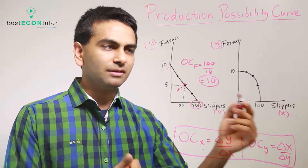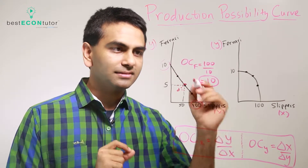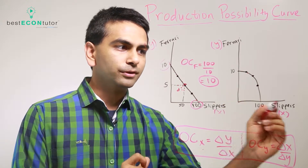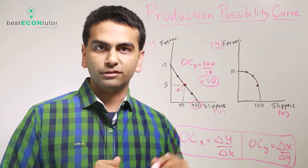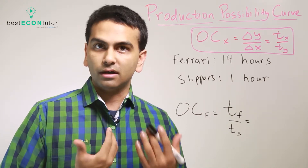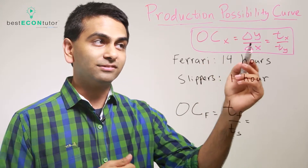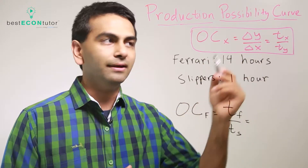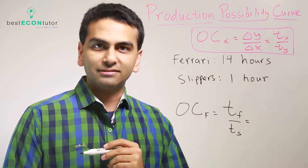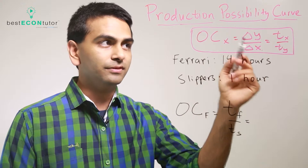What if your PPF isn't a straight line but a curve? In that case, the opportunity cost is not constant — it's not the same everywhere. On a straight line the cost is the same everywhere because the slope is the same. On a curve, as you produce more slippers the cost of slippers goes up because the slope gets steeper. Now, if you're given the number of hours it takes to make a good rather than how many goods you can produce, the opportunity cost is measured differently. The opportunity cost of X is either the units of Y you're giving up divided by units of X, or it's the time it takes to make one item of X over the time to make one item of Y.